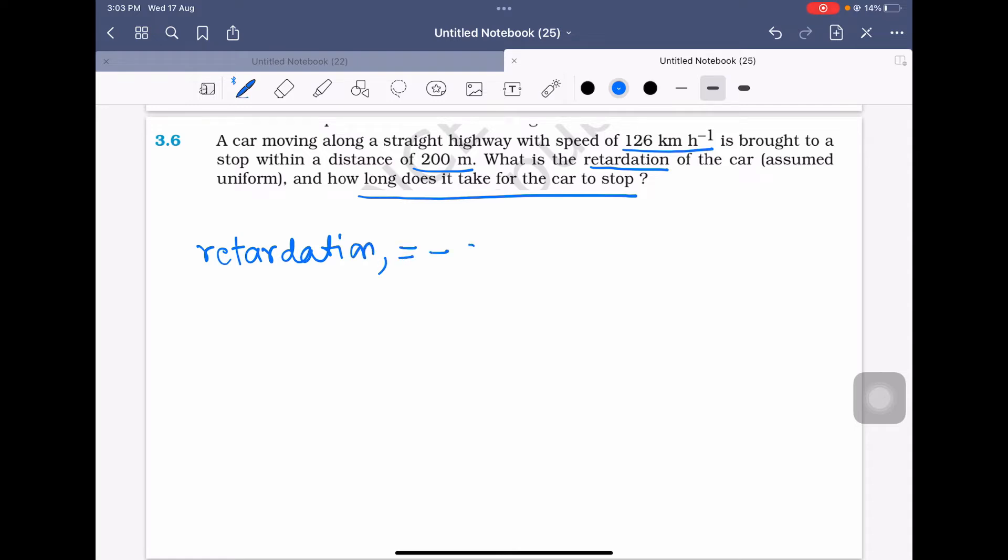Retardation means negative acceleration. So we have to find acceleration then multiply it with minus 1. Then how long does it take for the car to stop means we have to calculate the time required for the car to stop.